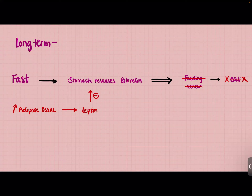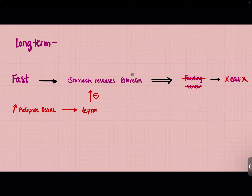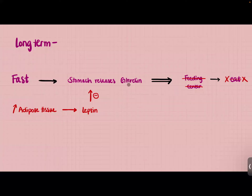Those were both short-term mechanisms, meaning they occur directly after you eat. This next mechanism is long-term — it functions over an extended period of time. When someone accumulates high levels of adipose tissue, they produce the hormone leptin. Leptin will inhibit the release of ghrelin, so you won't feel as hungry anymore, and therefore you won't eat as much. This is our body trying to regulate its energy levels.